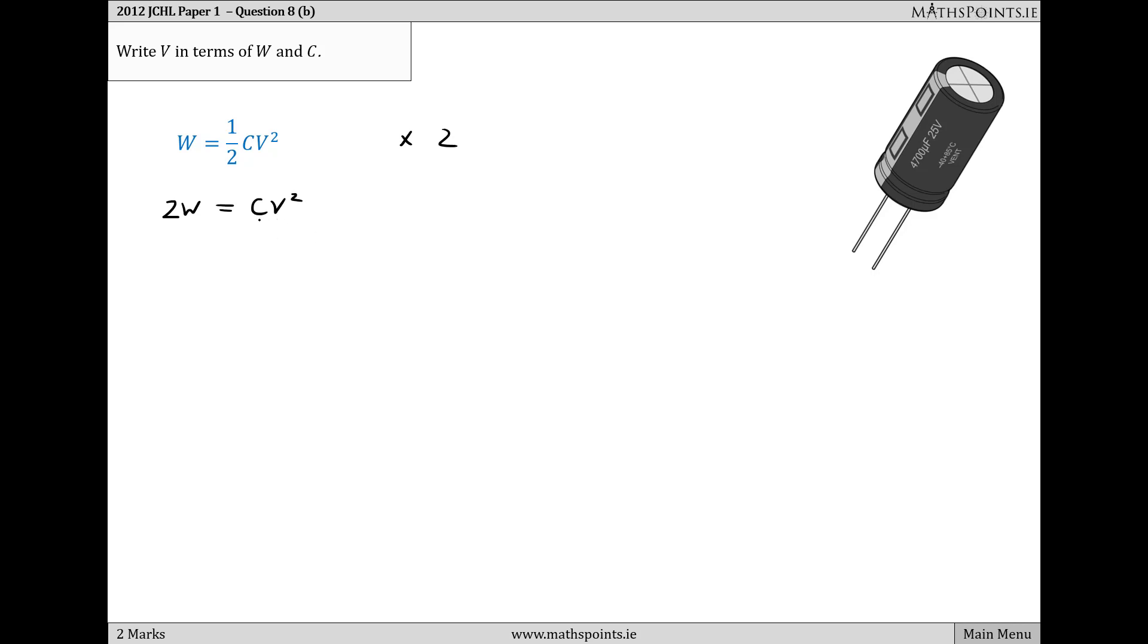I'm looking to isolate the V, so to remove the C I'm going to divide both sides by C, and I get 2W over C equals V squared. Finally, to get V on its own, I'm going to take the square root of both sides. The square root of V squared equals V, which equals the root of 2W over C.